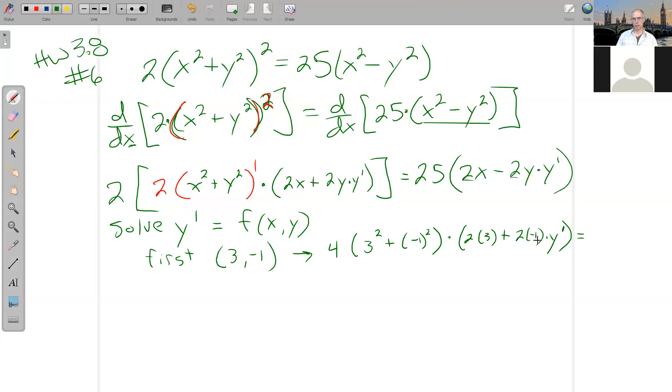And that's equal to, let's see, I can factor this 2 out maybe and say that's 50 times x which is 3, minus 2 times negative 1 times y prime. I factored that 2 out, didn't I? I should have done that in a different step, that was careless. Okay. I think that looks all right.